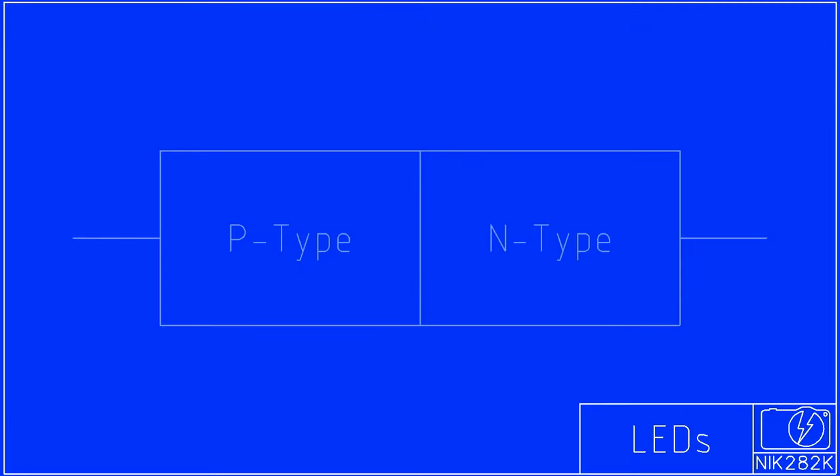In its most basic form, an LED is a junction between positively and negatively doped semiconductor material.